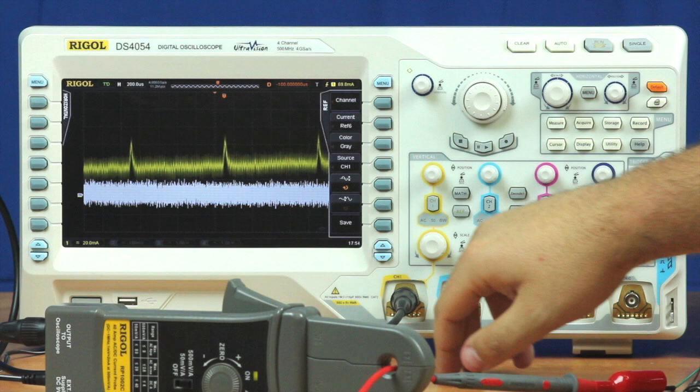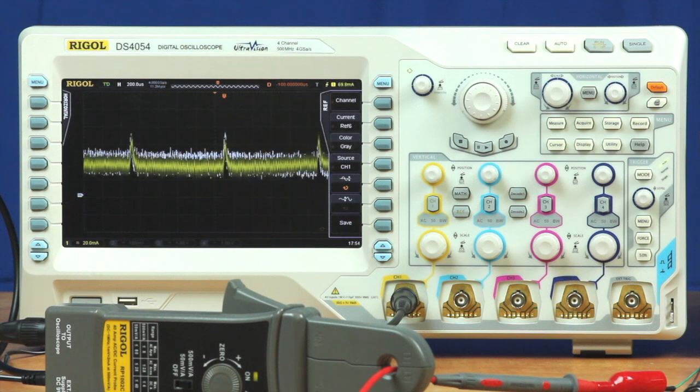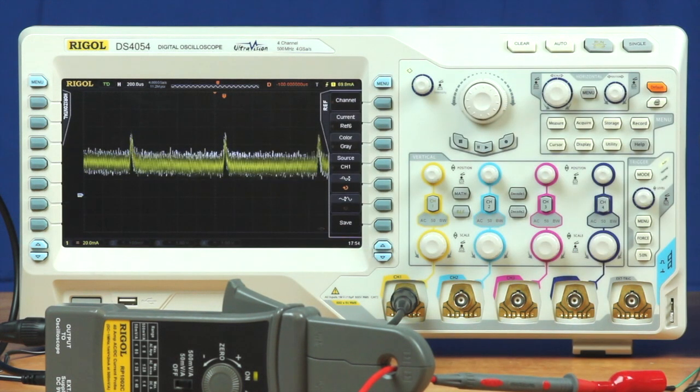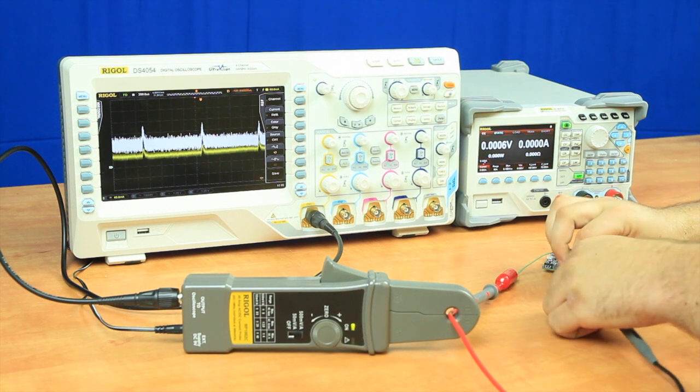First, I'm going to set a reference and save it. We can see our reference right behind the signal. Now that we have a reference, we're going to move to our load. We're going to hook up our battery to our load and disconnect the IoT board.